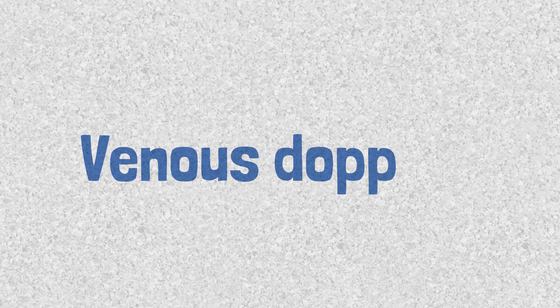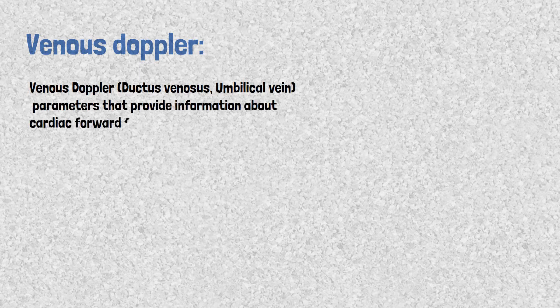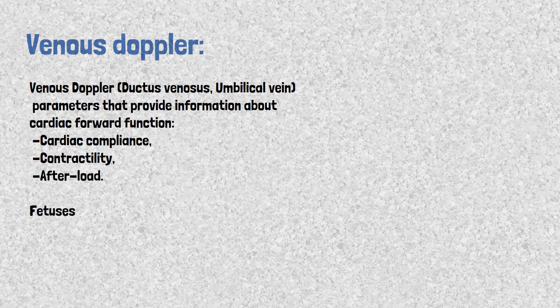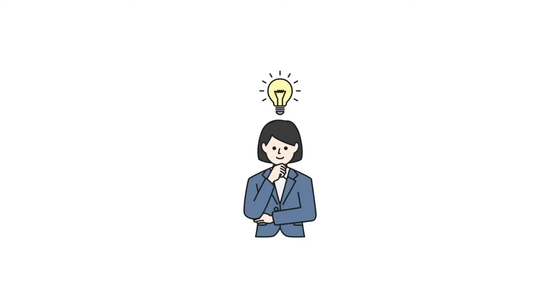Venous Doppler of the ductus venosus and umbilical vein provides information about cardiac forward function, cardiac compliance, cardiac contractility, and afterload. Fetuses with abnormal cardiac function show pulsatile flow in the umbilical vein. Normal umbilical vein flow is monophasic.